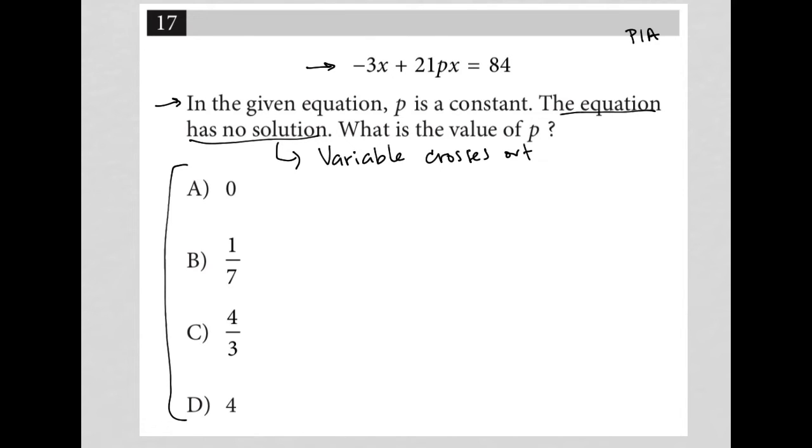When I plug these possible answers in, for instance, if p were 0, what would happen? I'd have negative 3x plus 21 times 0 times x equals 84. Of course, this is all gone, but I still have negative 3x equals 84, which means I can find an x value, which means this is going to have a solution. So choice A is gone for that reason.